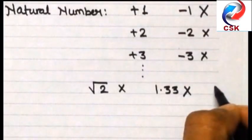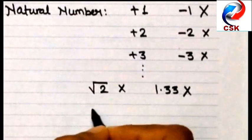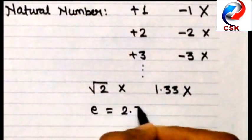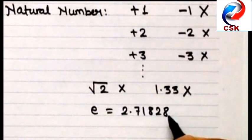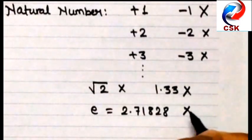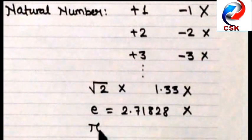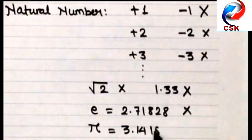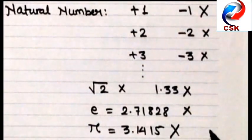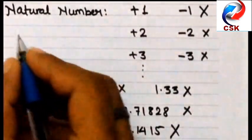In the same way 1.33 contains a decimal point, so obviously this cannot be a natural number. Let's take exponential e, which is equal to 2.71828. Again, cannot be a natural number. Pi 3.14159 cannot be a natural number because all these numbers contain a decimal point.